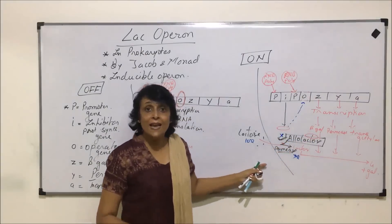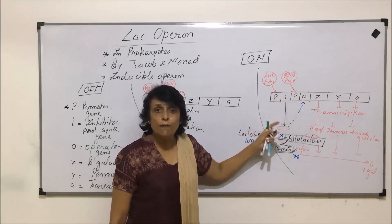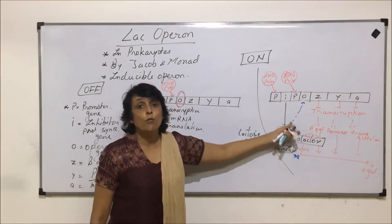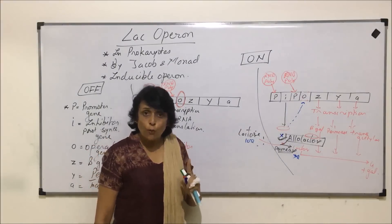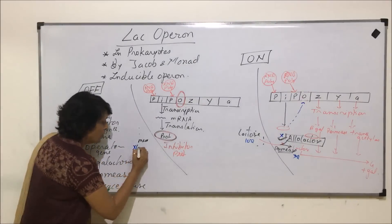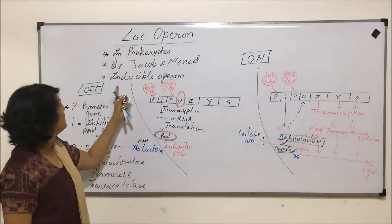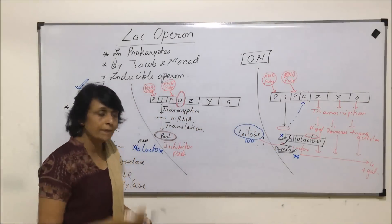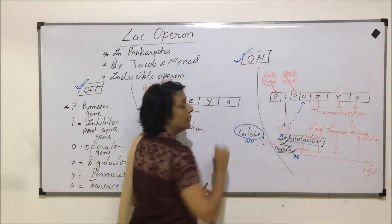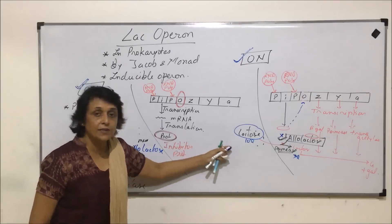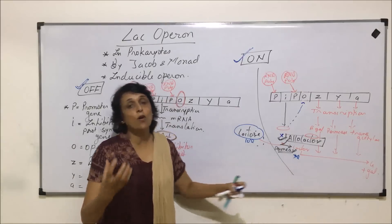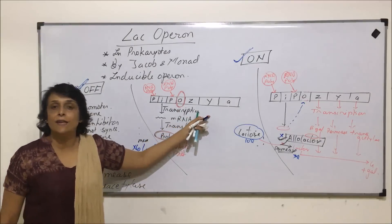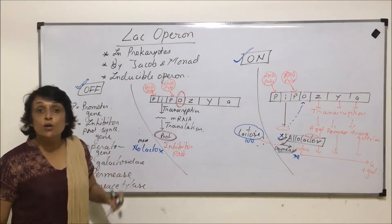No enzyme is synthesized. This makes sense because these enzymes were required to break down lactose — now that all lactose is gone, we don't need any enzyme, so why should transcription and translation take place? In the condition where there is no lactose, the operon will remain in off mode. As soon as lactose is available in the medium, the operon will be turned on. This helps the cell or bacterium to digest the lactose and conserve energy when lactose is not available, by preventing the transcription and translation process.